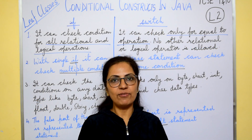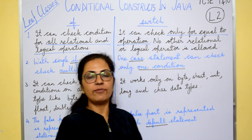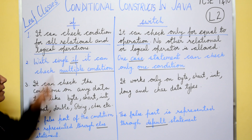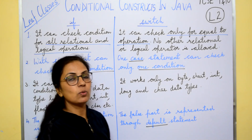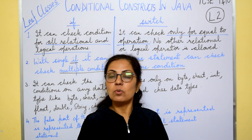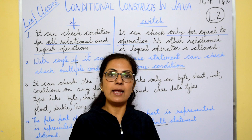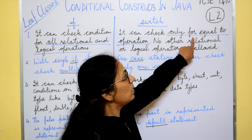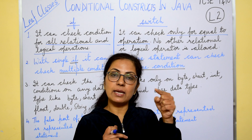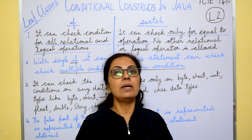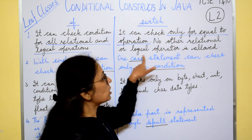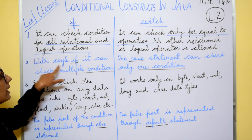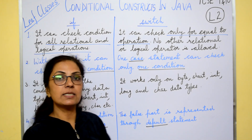The difference between if and switch construct is also asked in exams. First difference: if can check conditions for all relational and logical operators — less than, greater than, not equals to, equals to, and, or — but switch can only check for equal-to operation because it matches the case value with the control variable. Second difference: with a single if we can check multiple conditions combined, but each case statement can check only one condition, and that too of equality.